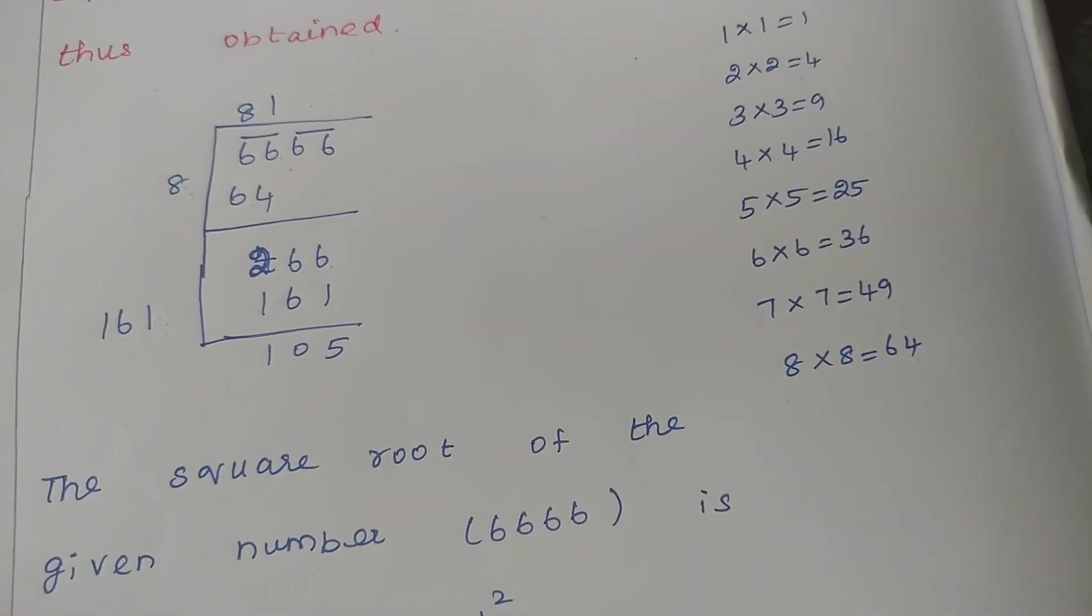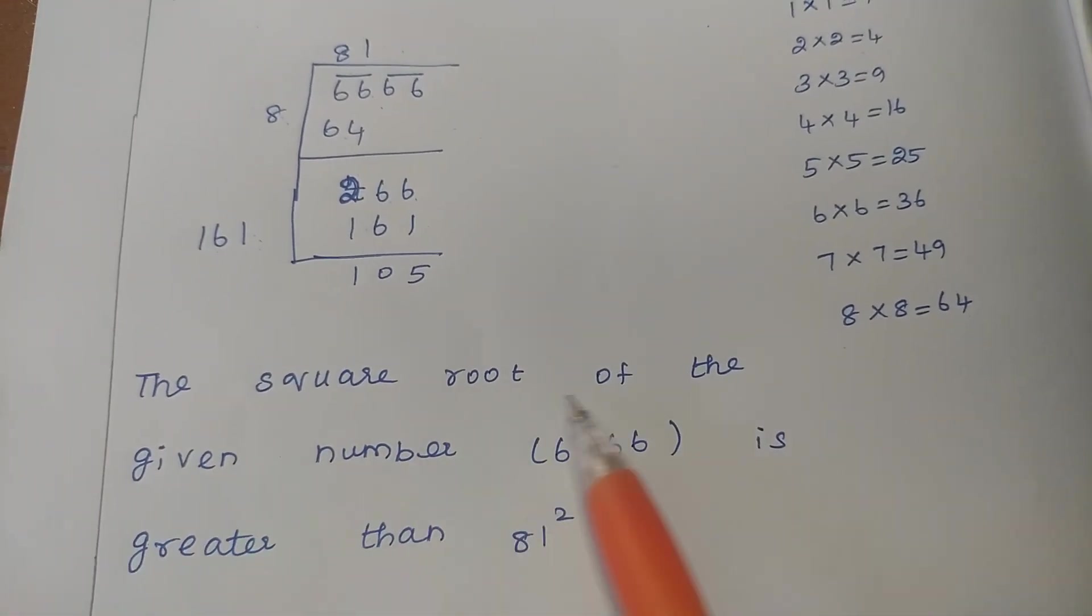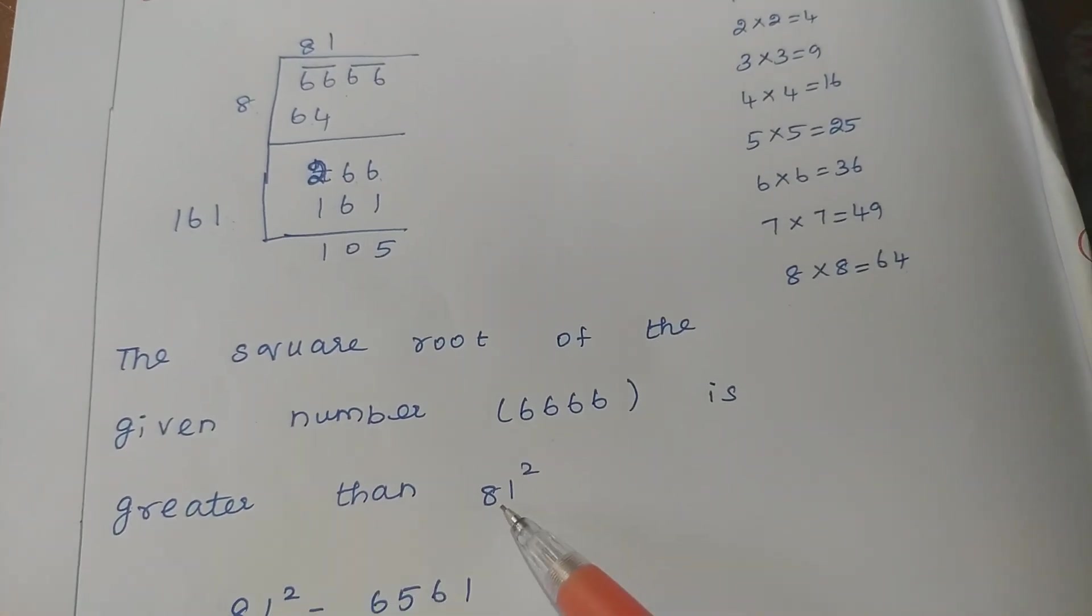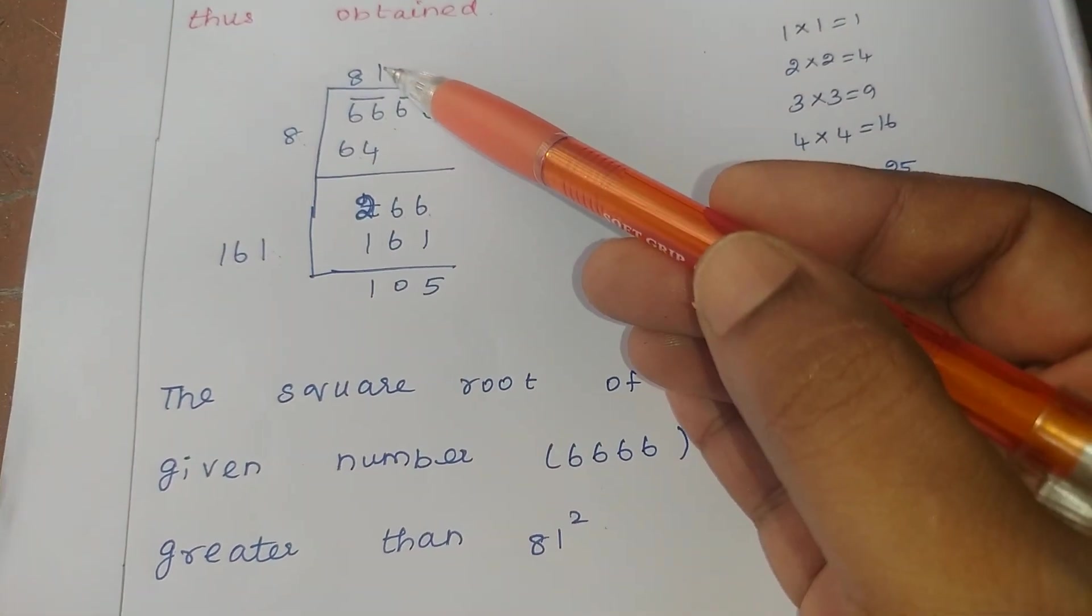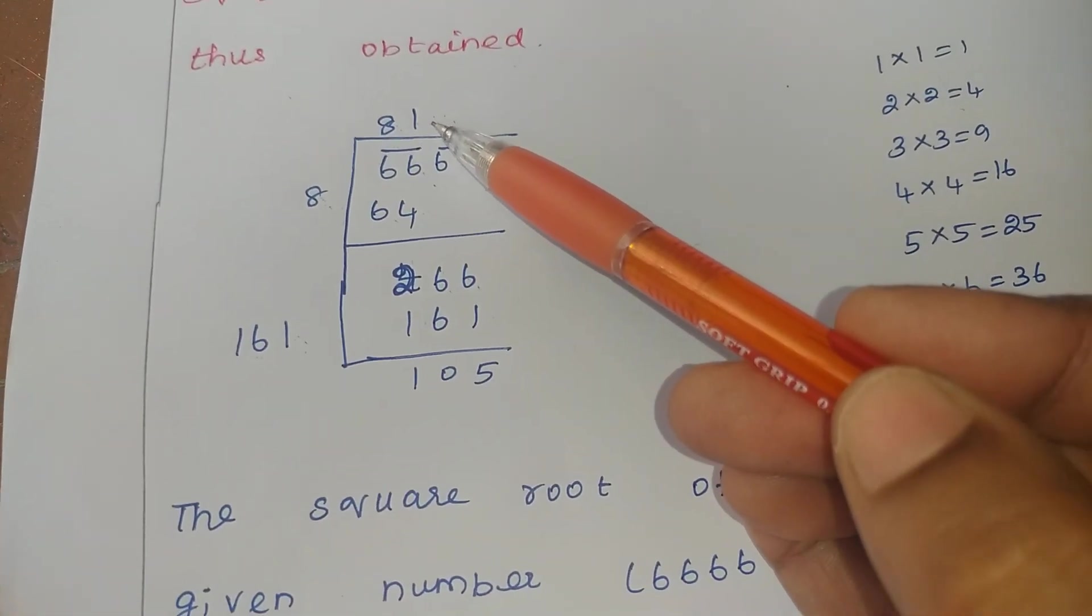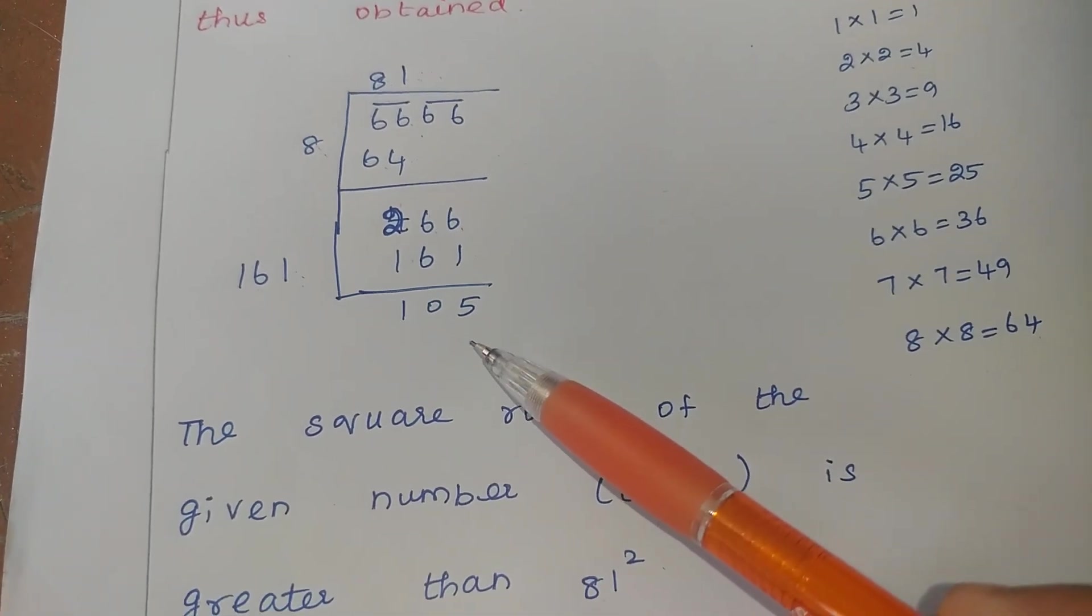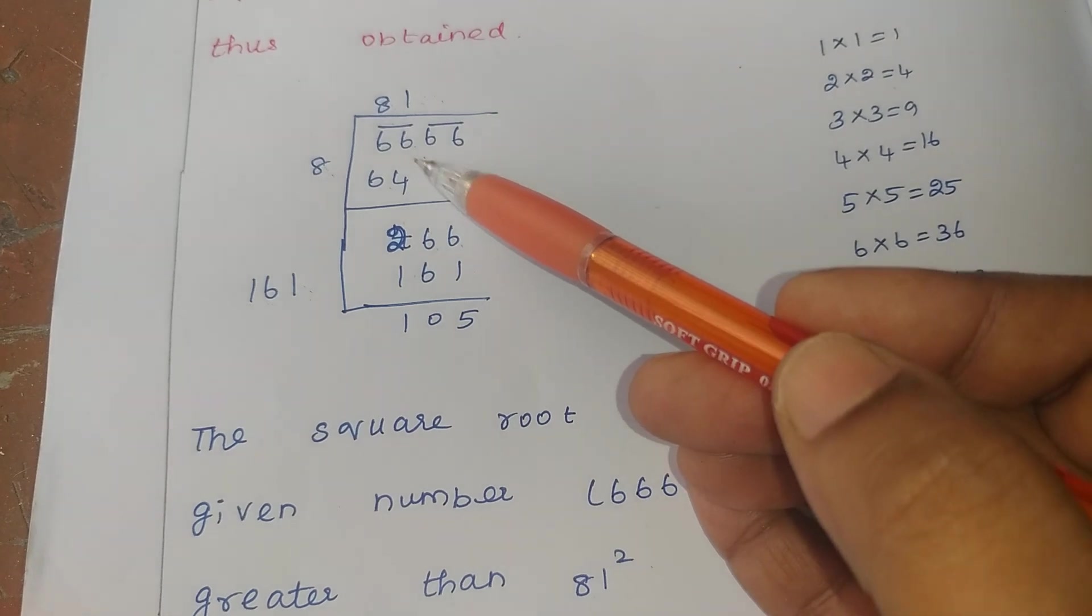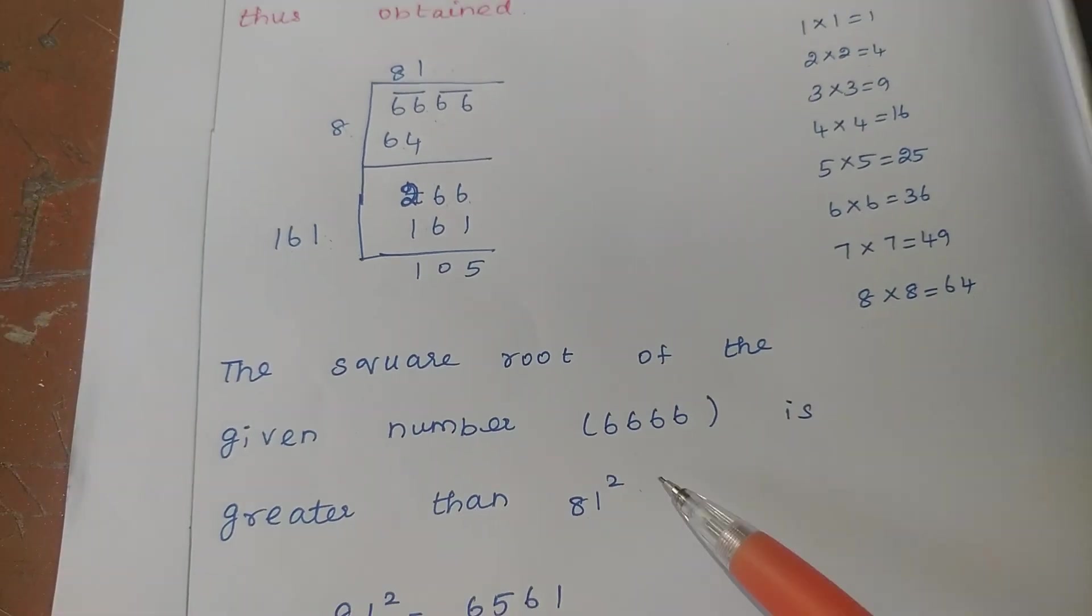So we got the least number. Now we check here. How? See, the square root of the given number. What is the given number? 6666 is greater than 81 square. Because the number 81, we are getting here 81 square. But you are not getting accurately answer. So the square number is greater than 81 square.